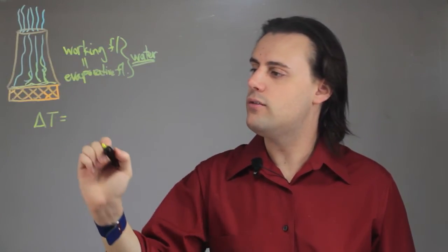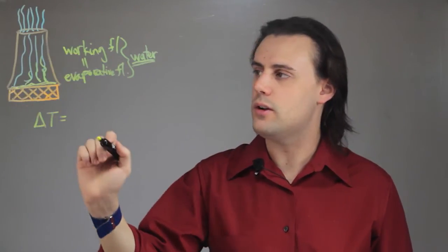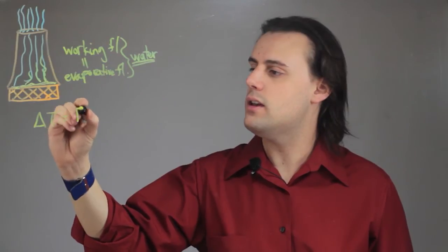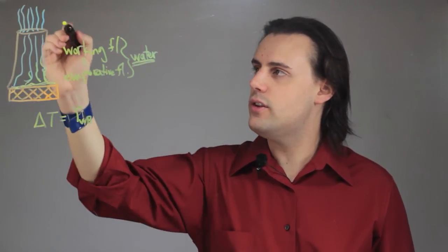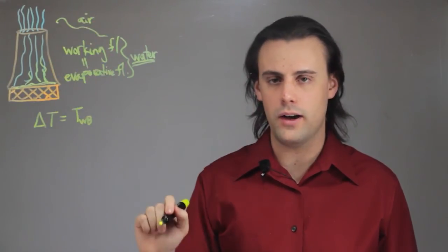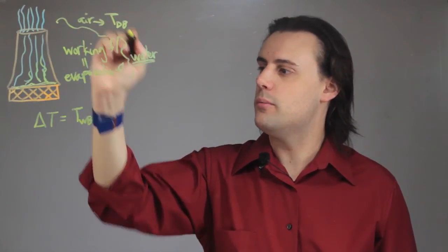So we have two different types of temperatures. We have the temperature of the material that we're cooling, which we call the wet bulb temperature, and we have the temperature of the air or the surrounding environment in general, which is known as the dry bulb temperature.